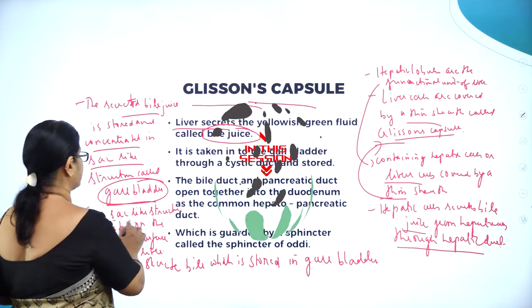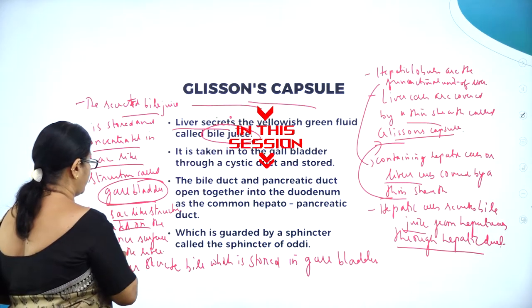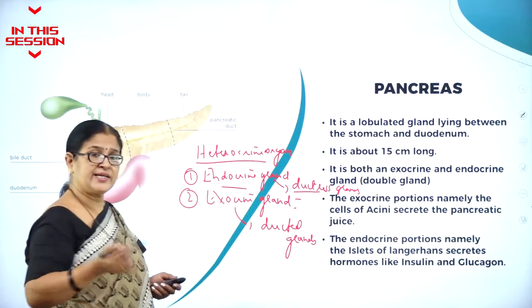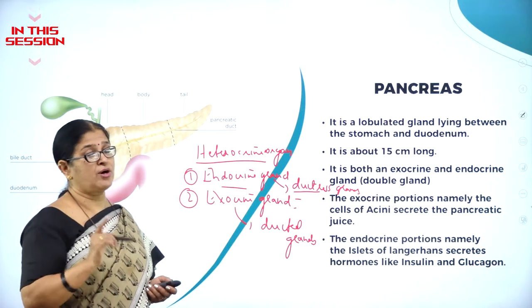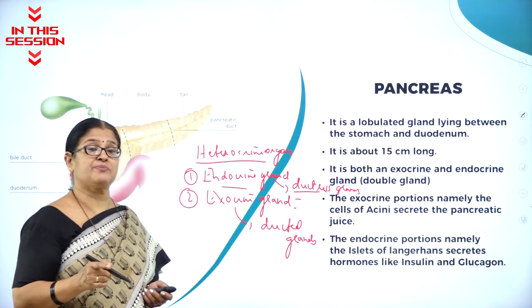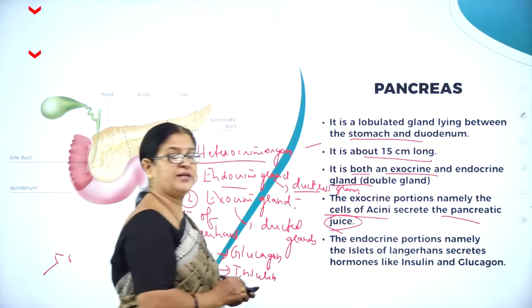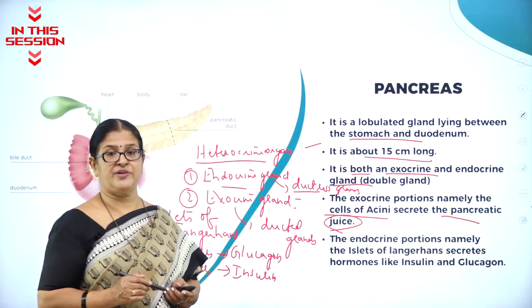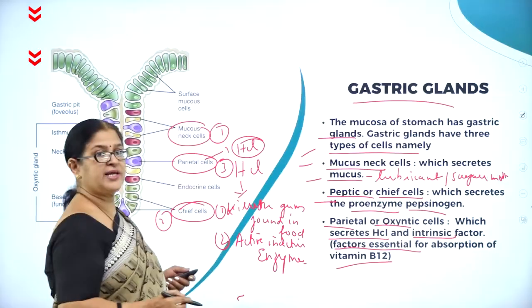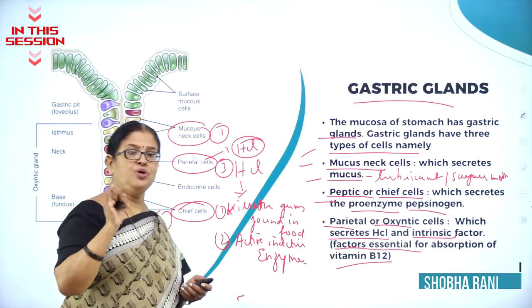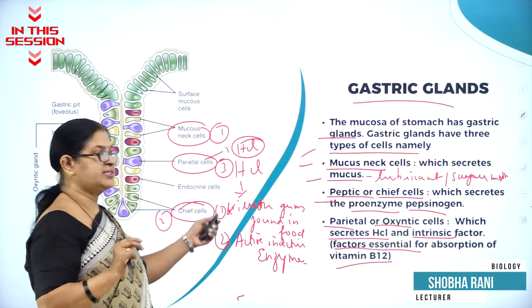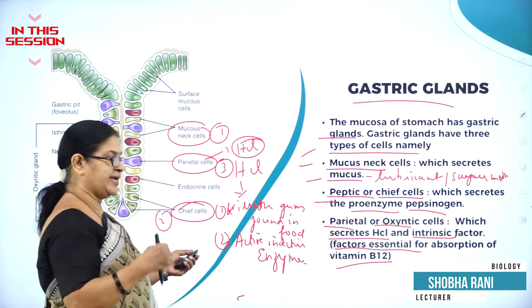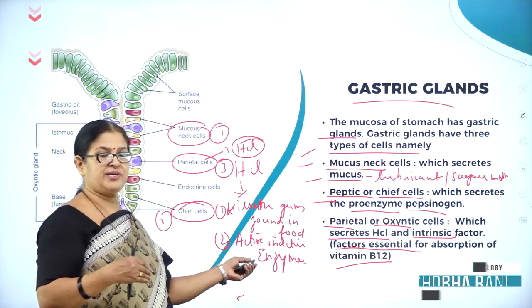Gallbladder, as we know, is a sac-like structure located on the inner surface of the liver. The secretions of endocrine glands are not called secretions but are called hormones. Pancreatic juice is very important in the process of digestion of proteins. HCL has two roles to play: one, it kills the germs carried along with the food, and second, it activates inactive enzymes.